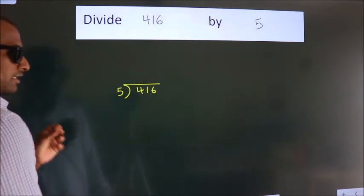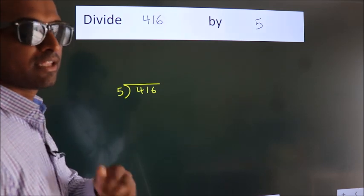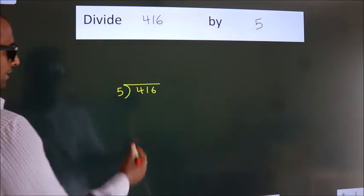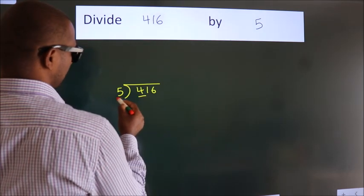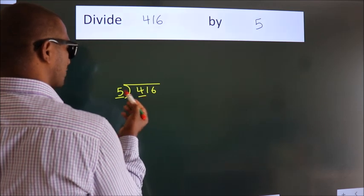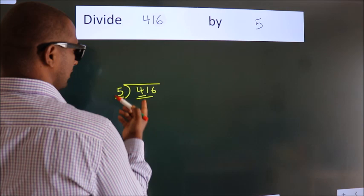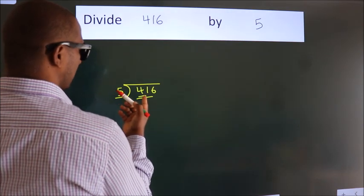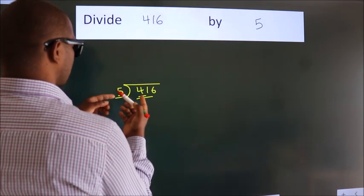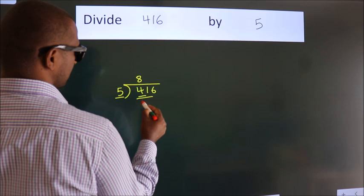This is step 1. Next, we have 4 here, 5 here. 4 is smaller than 5, so we should take two numbers: 41. A number close to 41 in the 5 times table is 5 times 8 equals 40.